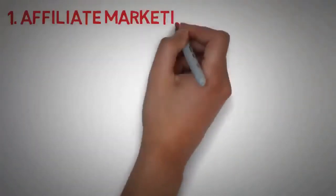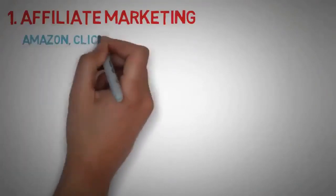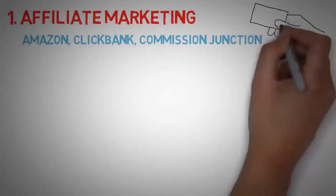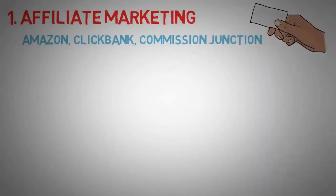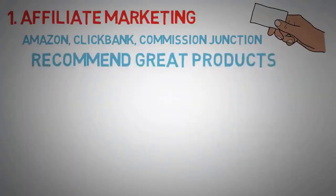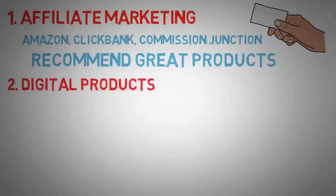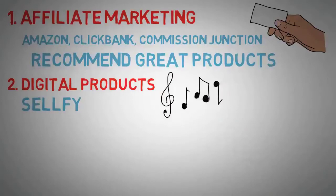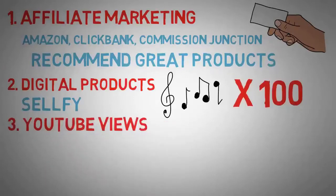So the first one is affiliate marketing. Now this would be like Amazon, Clickbank, Commission Junction - there's a whole bunch of them out there. Basically you send someone somewhere else to pay for something and you get a commission of that from 3% to 7%. I've seen all the way up to 80%. It's pretty easy - you just have to recommend great products that will sell themselves. That's the trick. Number two is digital products. So I experimented a little bit with this on Sellfy. You can actually make money by selling high quality backgrounds, templates, songs. Some people are actually willing to pay $20 to get my background music. Isn't that pretty awesome? If I could do that a hundred times, there's two grand right there.